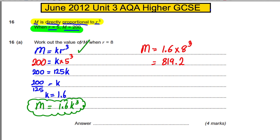Don't forget the units. We don't have any units in this particular case, so we can just write M is equal to 819.2. We're done for four unbelievably straightforward marks.